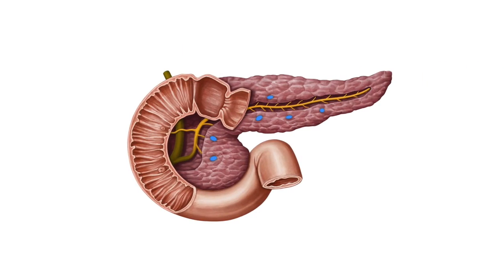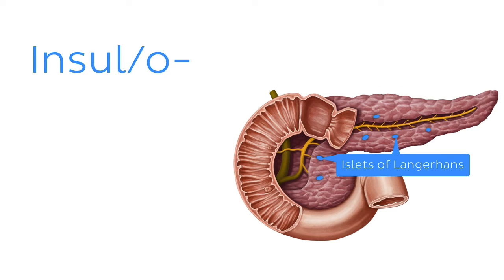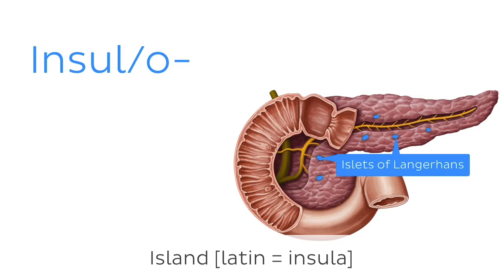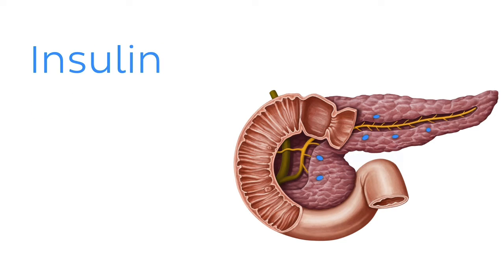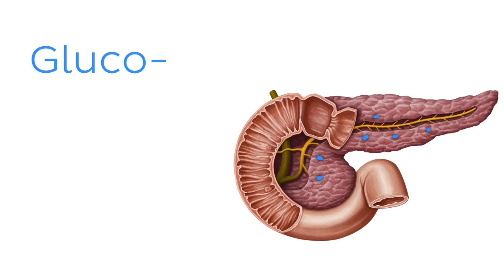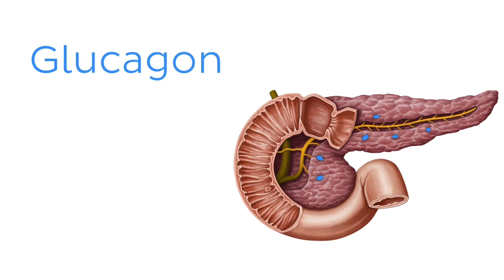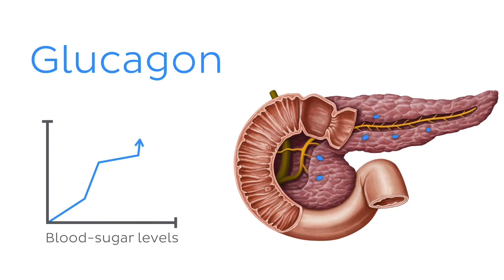Now it's time to take a look at the pancreas — more specifically the endocrine part of the pancreas, which is known as the pancreatic islets or islets of Langerhans. The root we have associated with them is insul or insulo, which is actually a good description of the endocrine tissue arrangement because it arises from the Latin word insula, which means island. For example, insular means pertaining to the pancreatic islets. It is also used in relation to insulin, a hormone produced by the endocrine pancreas which regulates our blood sugar levels. Speaking of blood sugar, it's important for us to also be aware of the root words gluco and glyco, which both come from the Greek words for sweet. You'll see them in terms like glucagon, another hormone produced at the endocrine pancreas, which increases blood sugar levels.